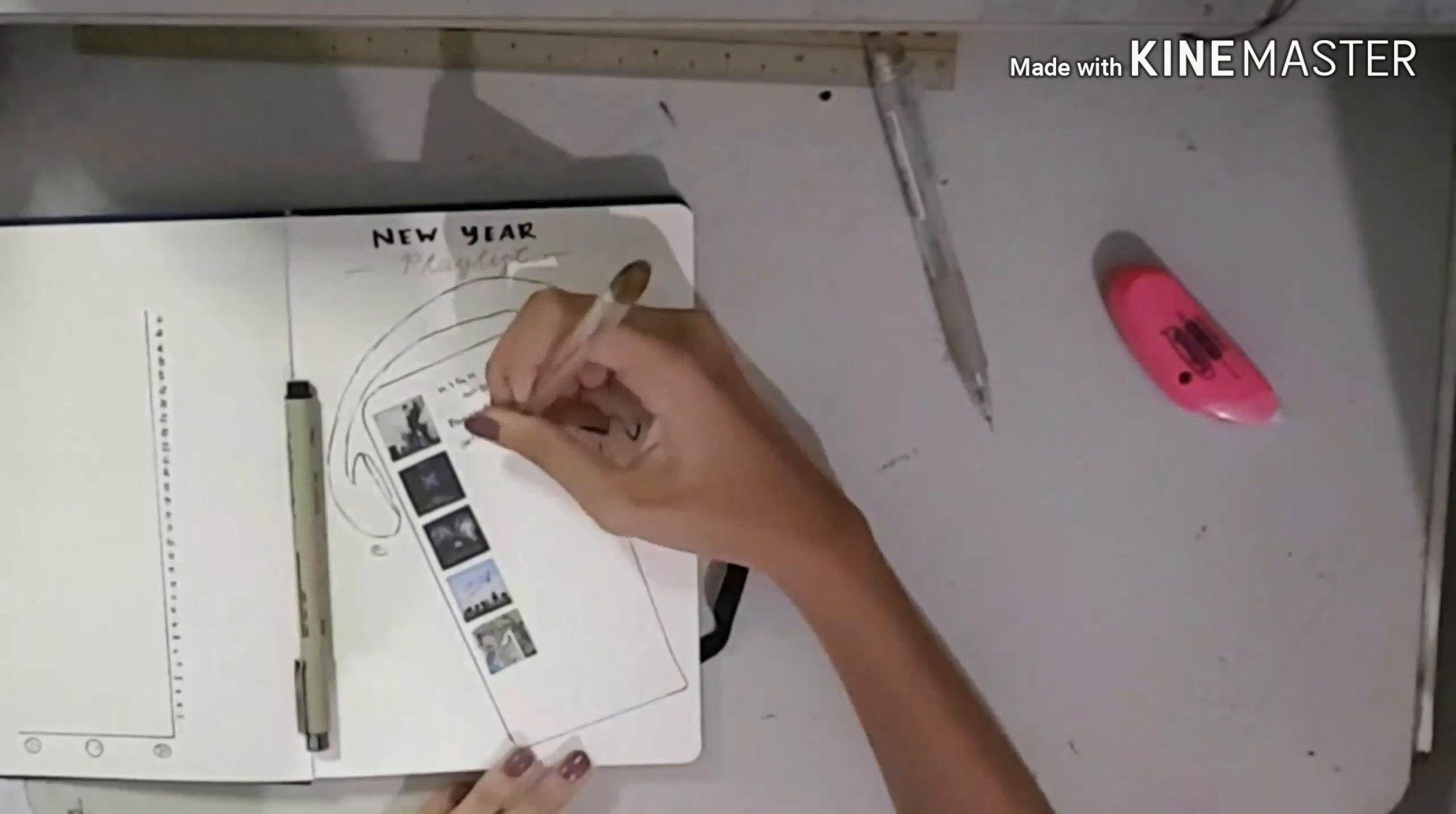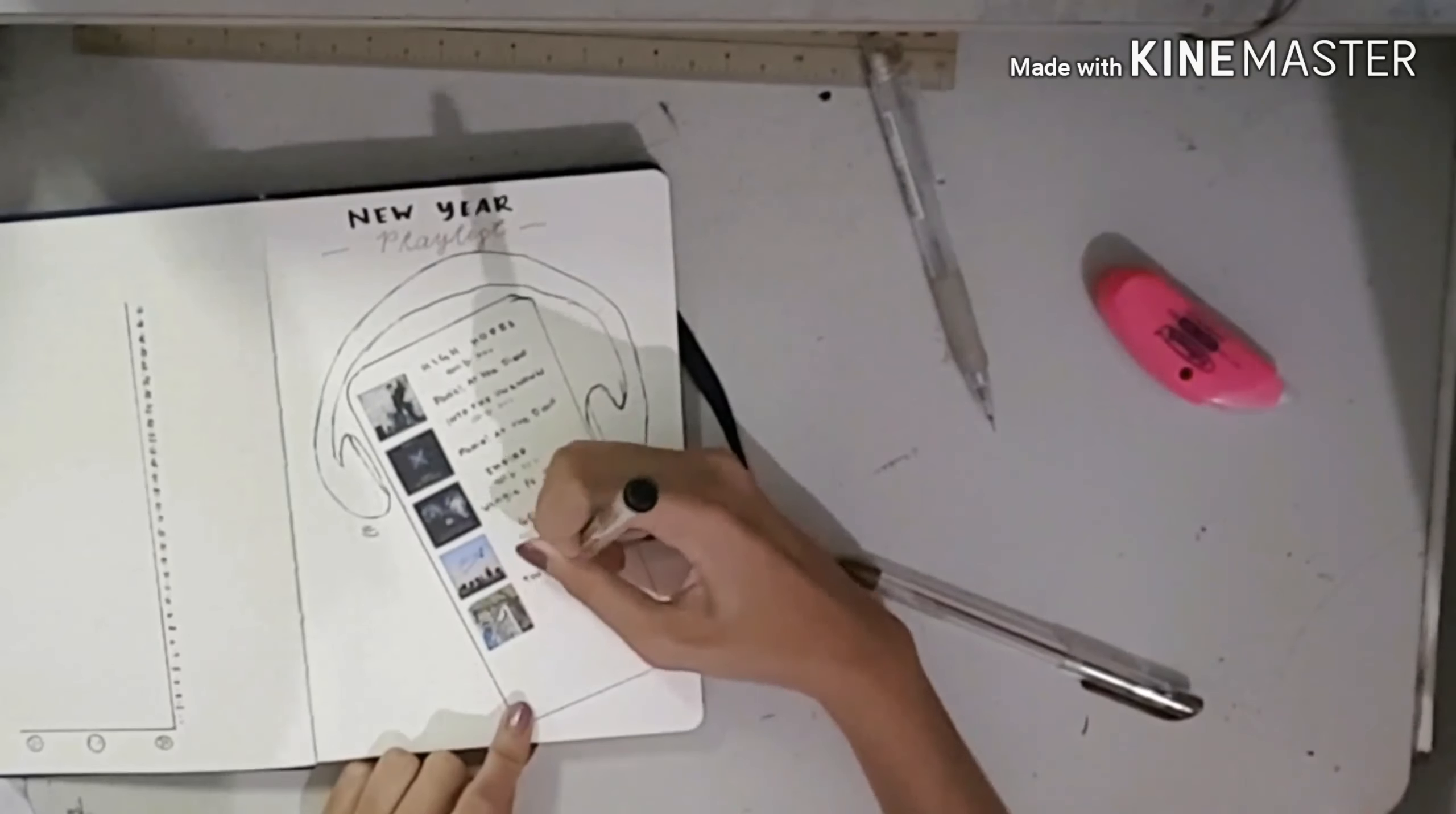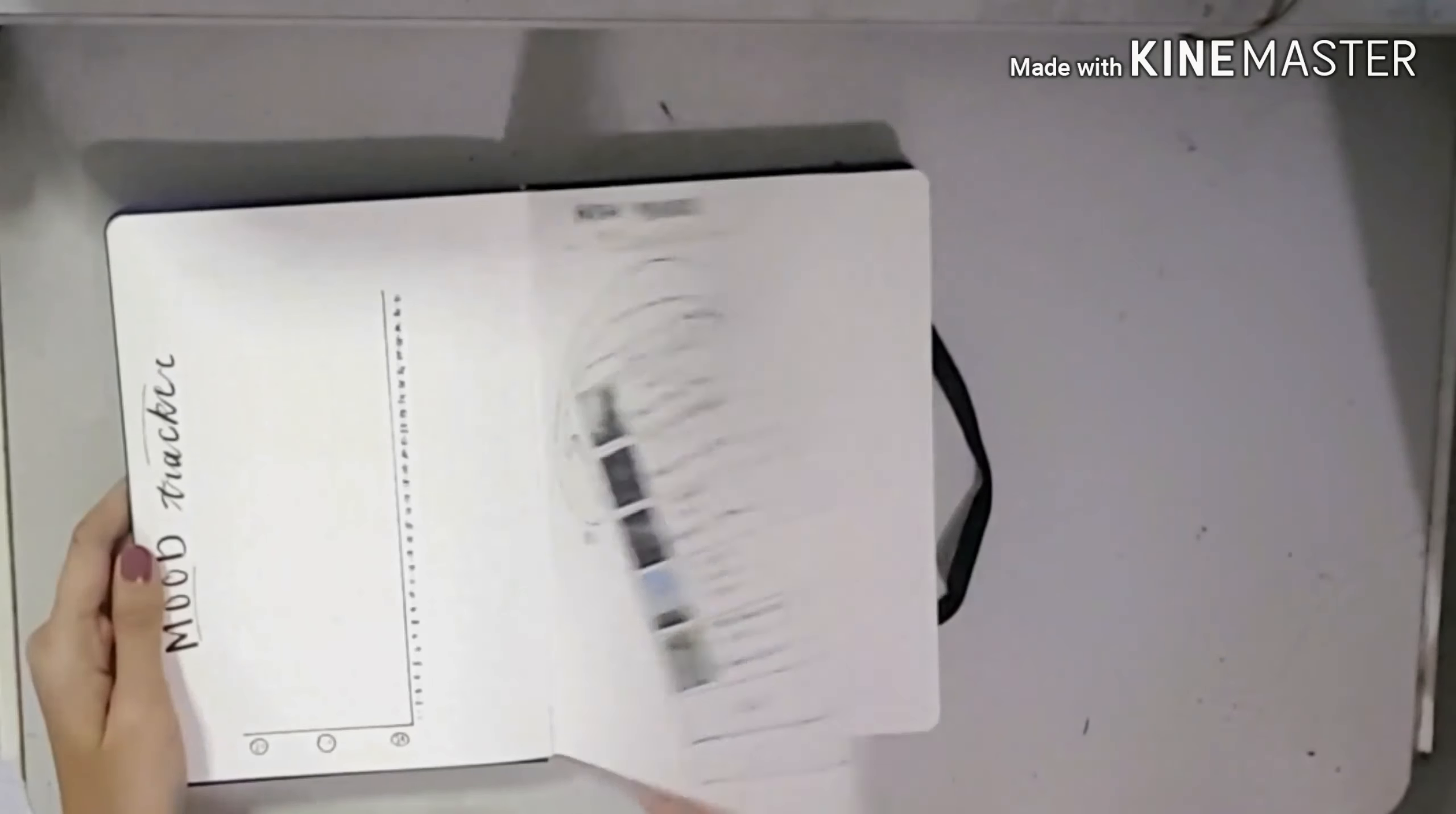The third one is Empire by Wengie featuring Minnie. She has been killing it with her songs, guys. I mean, for her to feature Minnie from (G)I-DLE is such a milestone for her. The fourth one is Go Up by SB19—of course, gotta support my P-pop—and the fifth one is The Other Side by Funnel Vision, and I love this song.